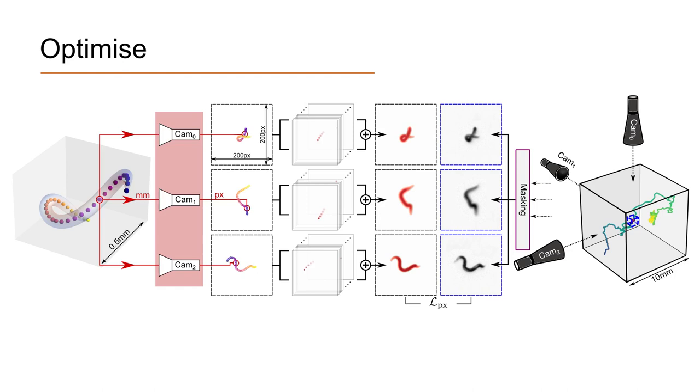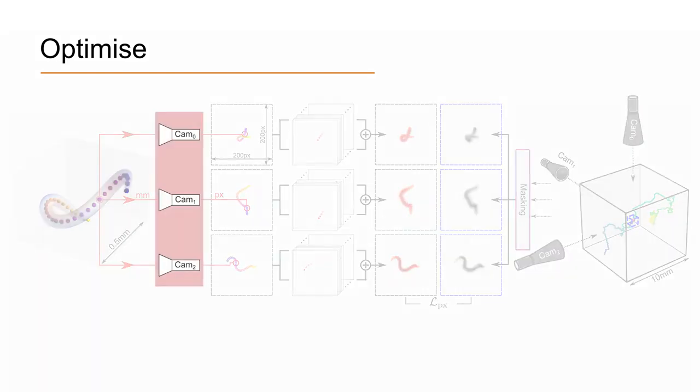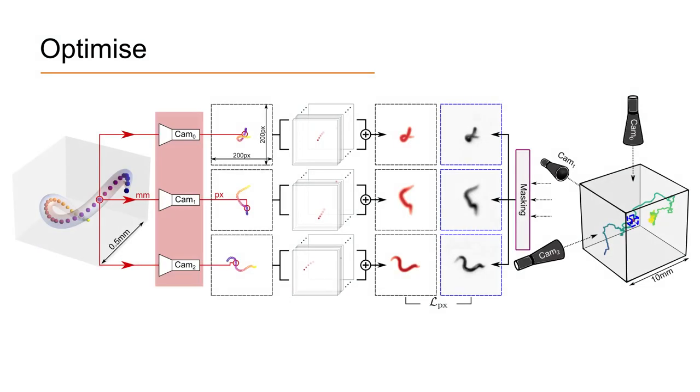Since the whole pipeline is built in PyTorch and is fully differentiable, we can then optimize the curve, camera and renderer parameters altogether using gradient descent until convergence.